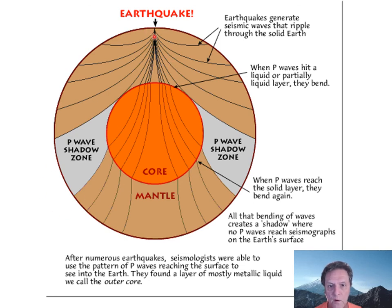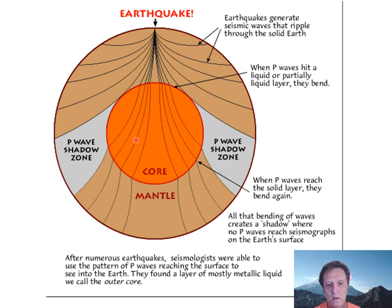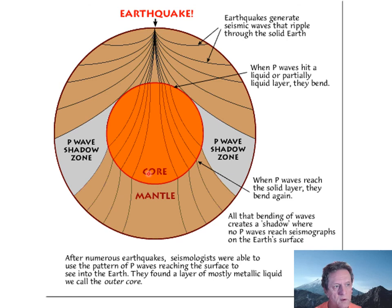For example, P waves generated by earthquakes hit the liquid outer core, where they bend, deflect, or refract. S waves will not go through the liquid core, but P waves will. Tracking these seismic waves gives us a good picture of the interior layered structure of the earth.